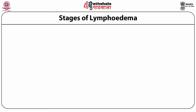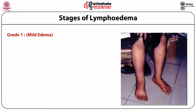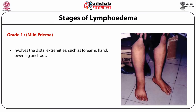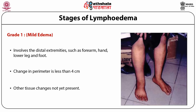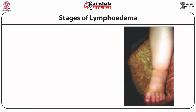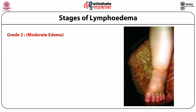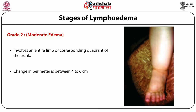Development of lymphoedema can be categorized into different stages based on severity. Grade 1, also called mild edema, involves the distal extremities such as forearm, hand, lower leg, and foot. The change in perimeter is less than 4 cm and other tissue changes are not yet present. Grade 2, also called moderate edema, involves an entire limb or corresponding quadrant of the trunk. Difference in perimeter is now between 4 to 6 cm, and certain tissue changes such as pitting are clearly visible.